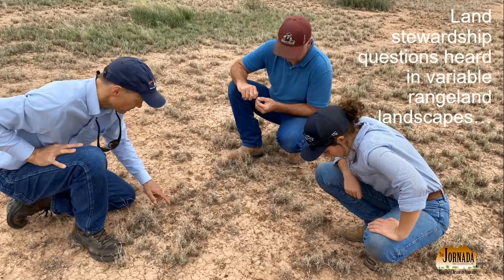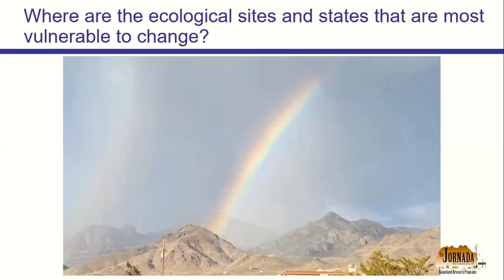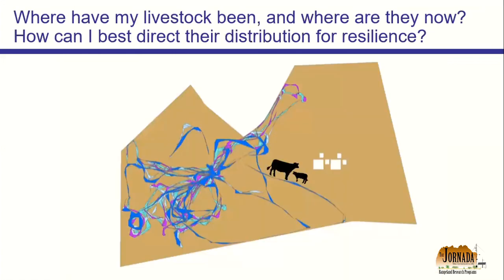What's exciting is that this workshop is designed to start answering some of these questions. A major question I hear is: where are the ecological sites and states that are most vulnerable to change? If I'm managing for rangeland health, where are those sites and states where I really want to put my attention? We don't always get a sign pointing us to those states, so we need other types of tools.